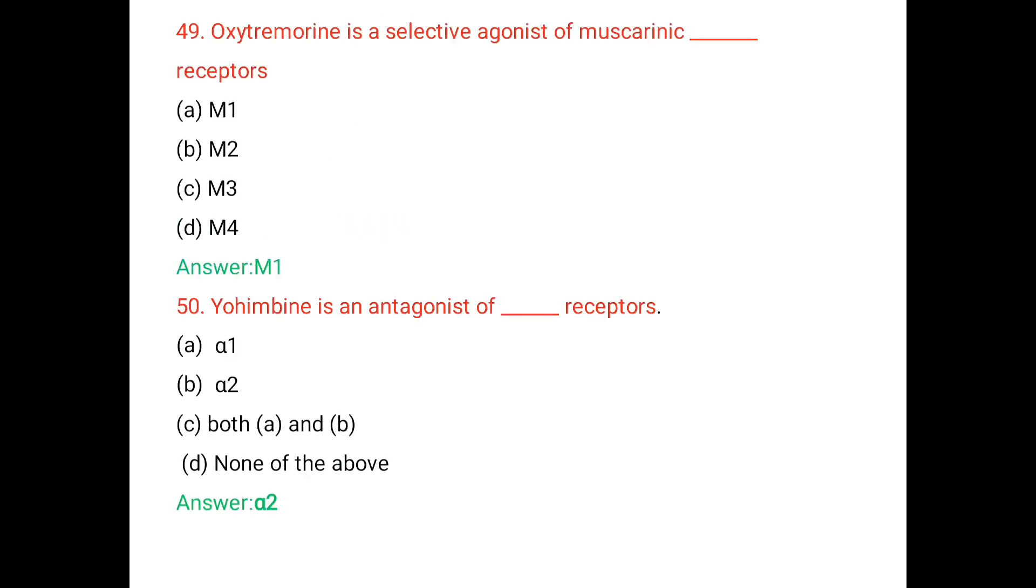Question number 49. Oxotremorine is a selective agonist of muscarinic receptors: A. M1, B. M2, C. M3, D. M4. The right answer is M1.